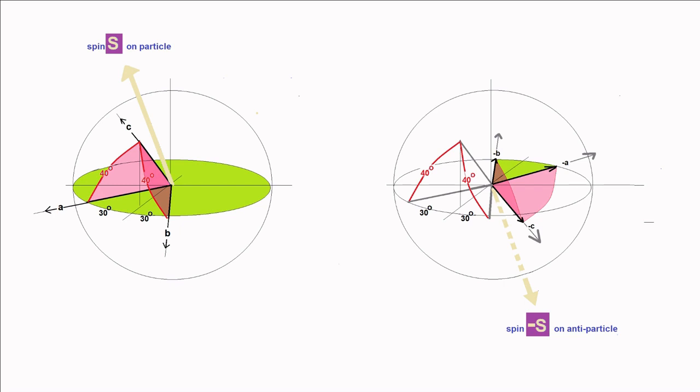If the spin on particle 1 is s, then the spin on its entangled partner, particle 2 is minus s. Let's call the spin on particle 1, s1, and the spin on particle 2, s2. So s2 equals minus s1. And the spin components of s2 along directions a, b, and c are the opposites of the components of s1 along those same directions.